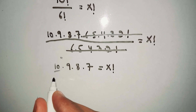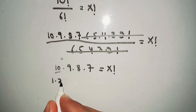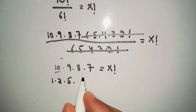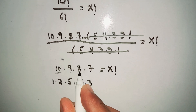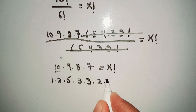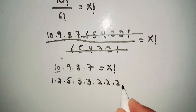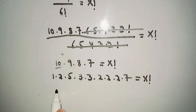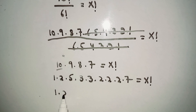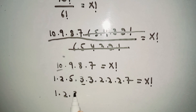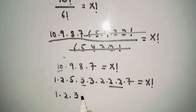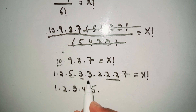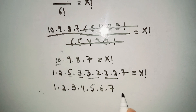Now we find the prime factors: 10 = 1 × 2 × 5, 9 = 3 × 3, 8 = 2 × 2 × 2, and 7 = 7. Rearranging these factors we get 1 × 2 × 3 × 4 × 5 × 6 × 7, which equals X factorial.